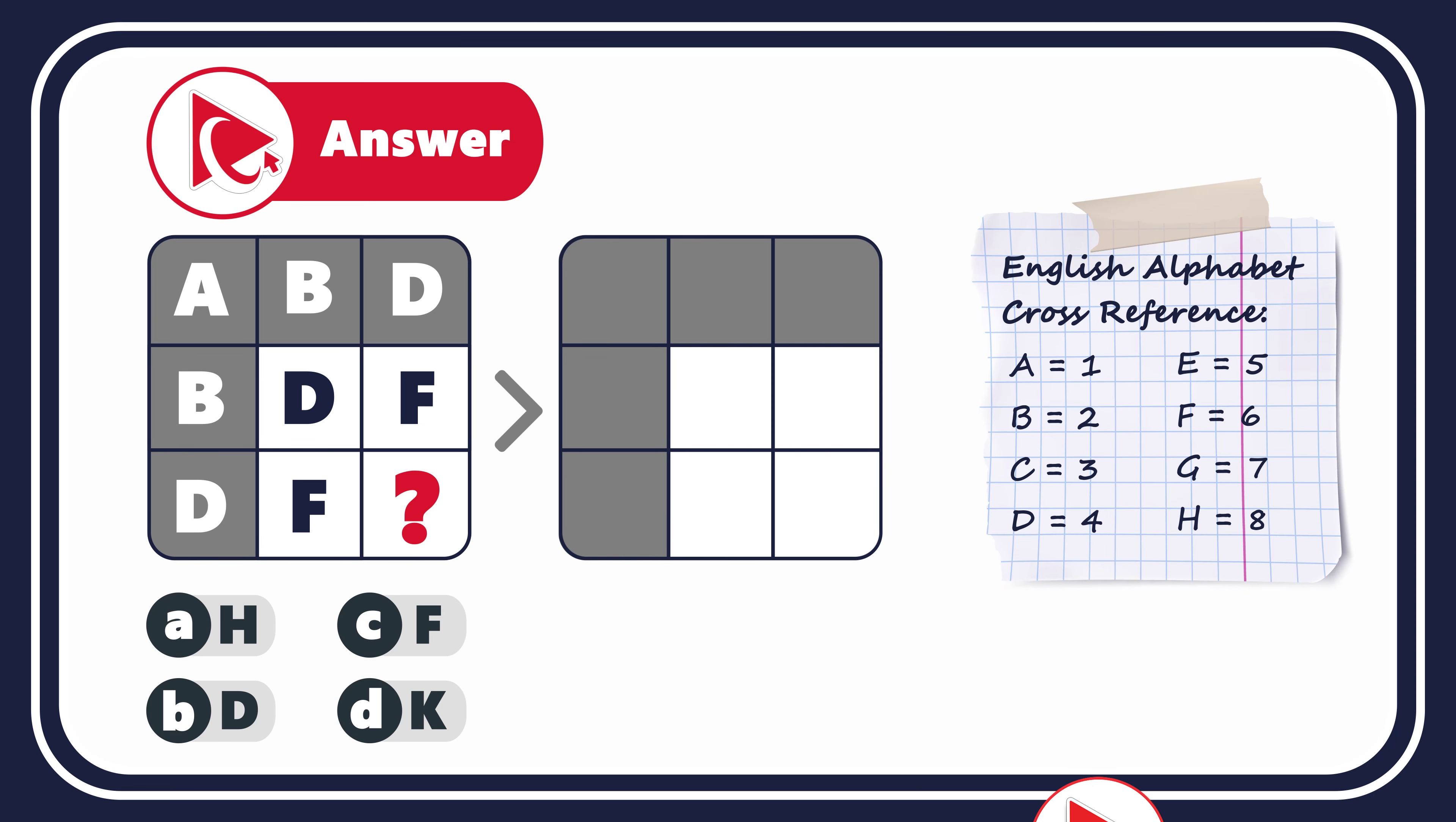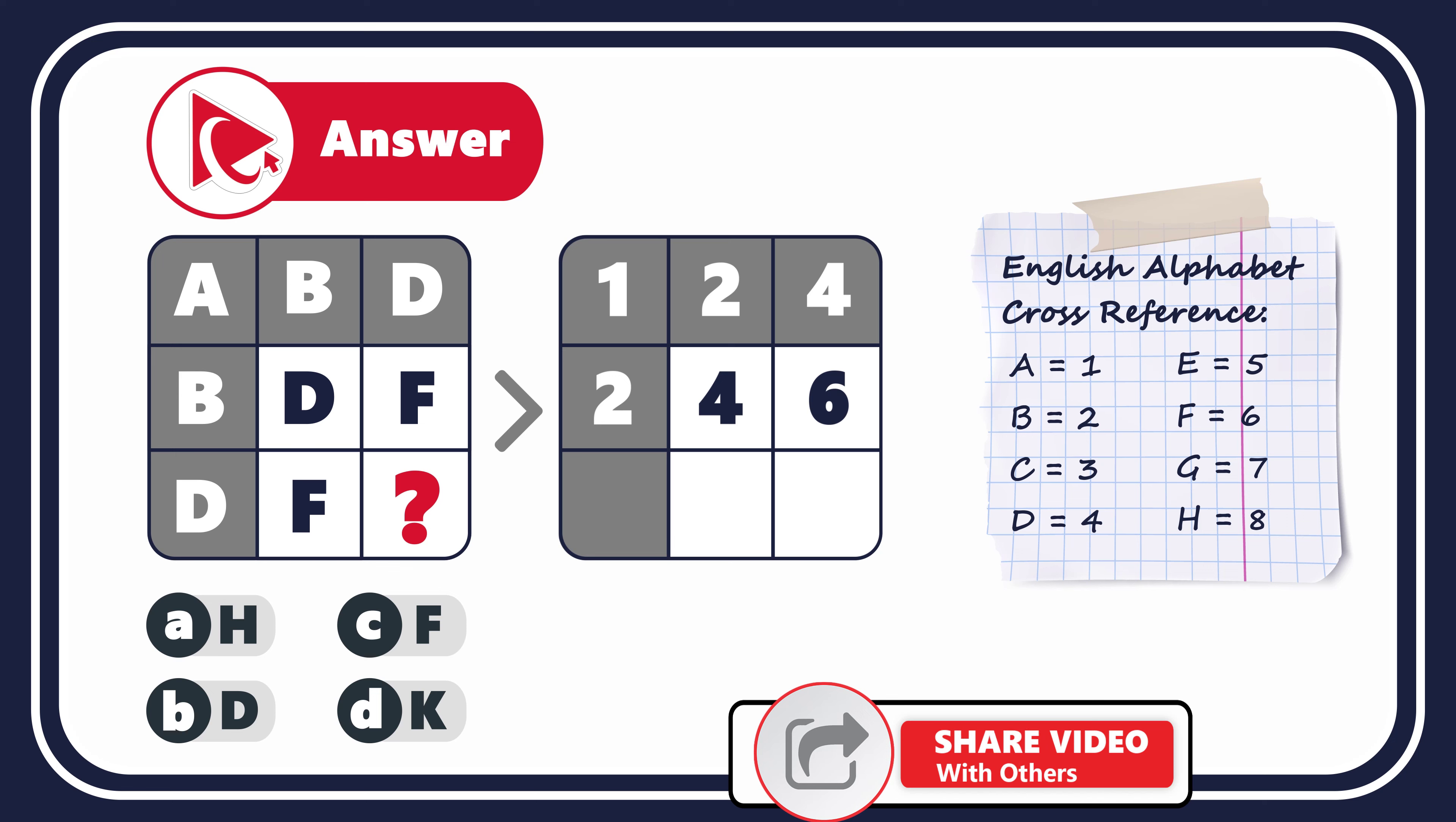If we follow this logic, we can replace all letters in all three rows with the numbers. So for the first row, the numbers will be 1, 2, and 4. For the second row, the numbers would be 2, 4, and 6. And for the third row, the numbers will be 4 and 6, and that would be the missing number.